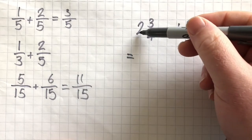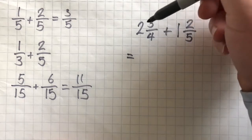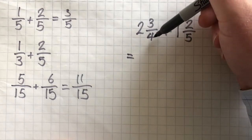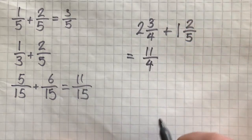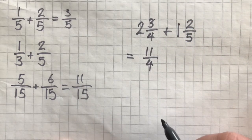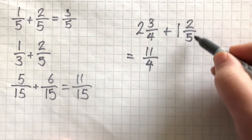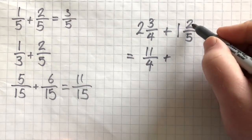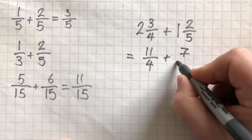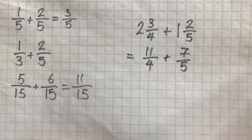We need to change two whole ones into quarters first. We can do that by doing 2 times 4 is 8, plus 3 is 11. So, 2 and 3 quarters is 11 over 4. For 1 and 2 fifths, using the same method, 1 times 5 is 5, plus 2 is 7, so we get 7 fifths.